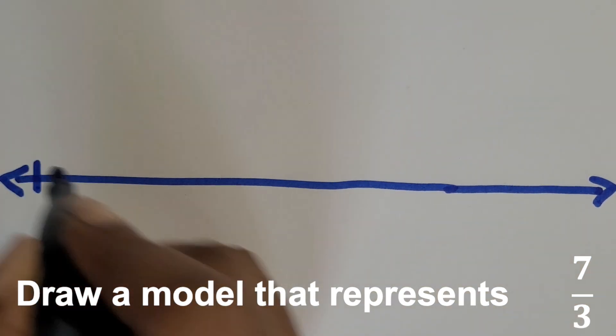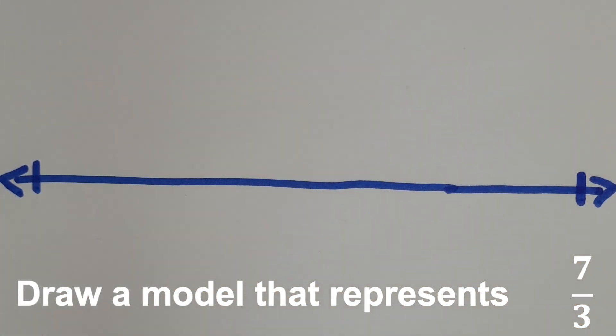So we're going to draw our line again and then draw our tick marks. So our first endpoint is zero, our second endpoint is four because we need seven thirds.